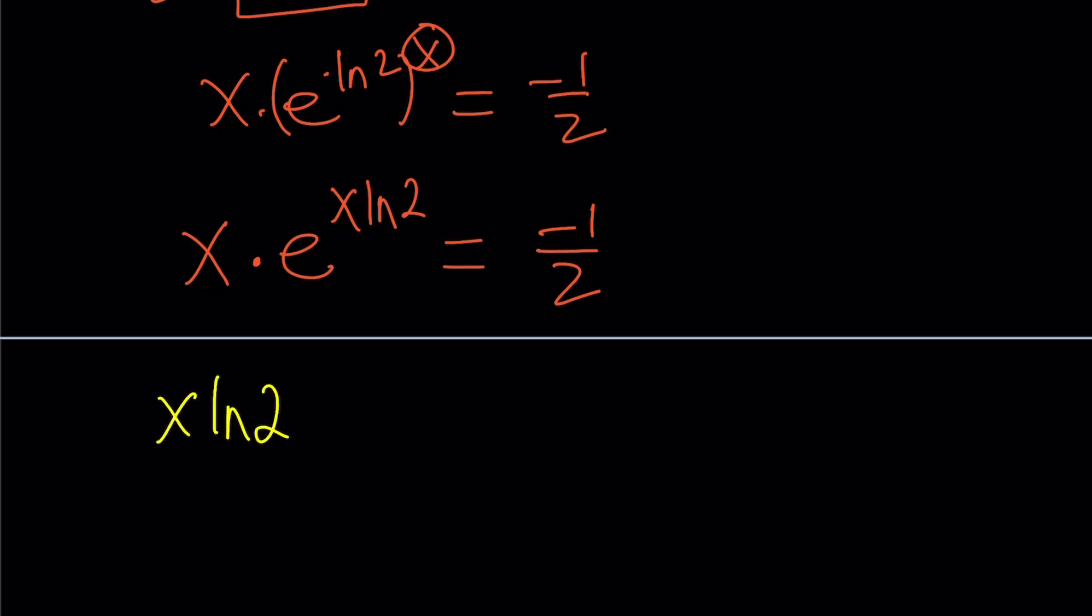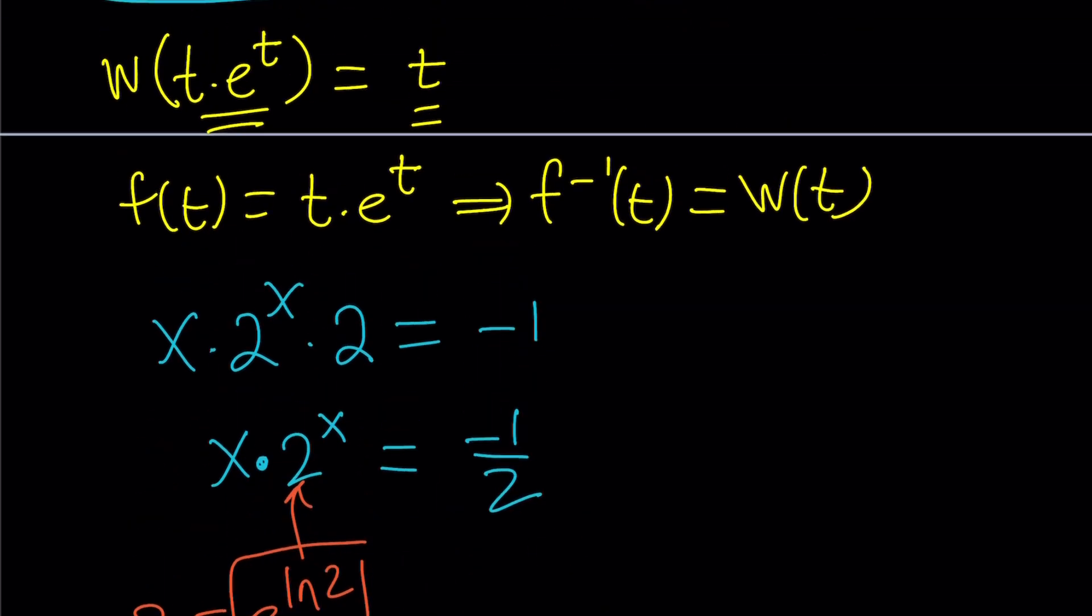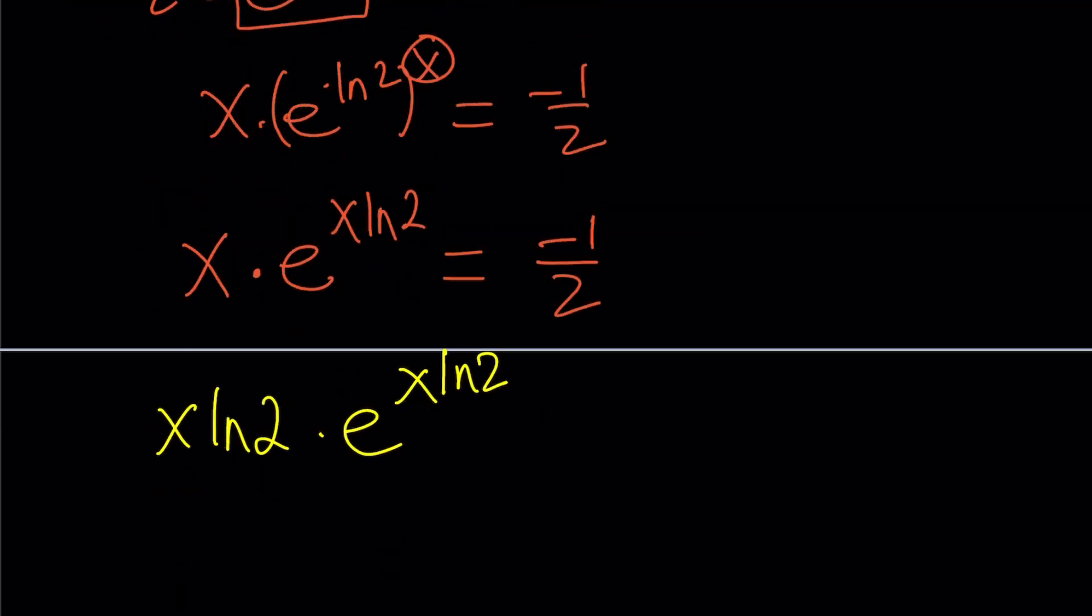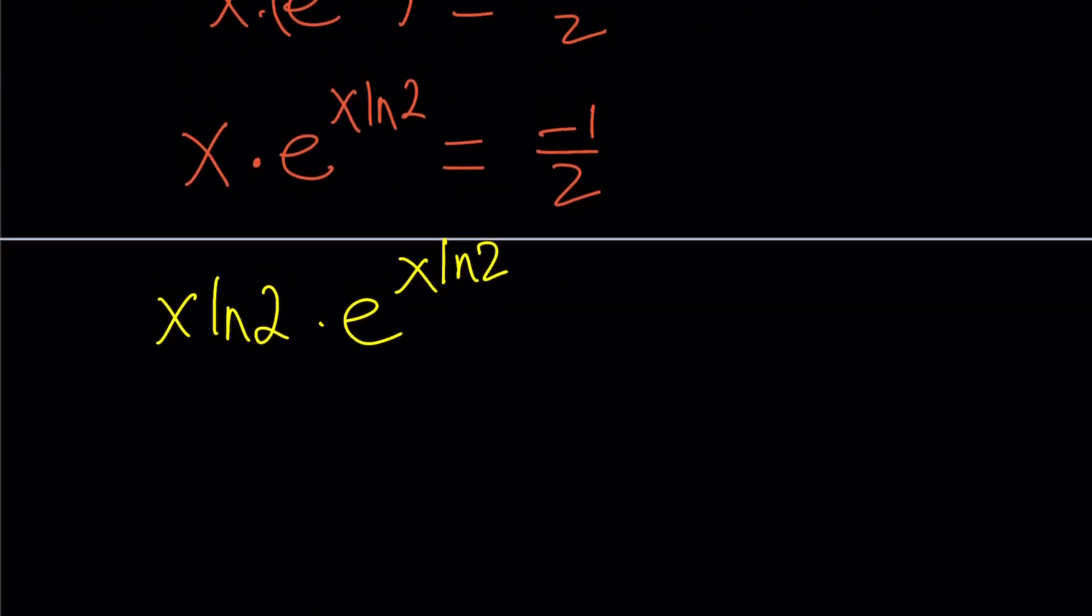When you do that, you get x ln 2 times e to the power x ln 2, which is what we're trying to get. Notice that we said we want to put our expression in this form, t times e to the t. And t is going to be x ln 2 in this case. So I multiplied both sides by ln 2, so this is going to be negative 1 half times ln 2.